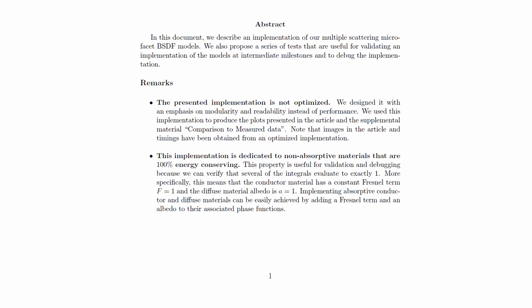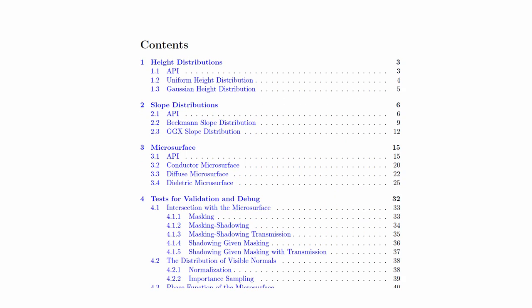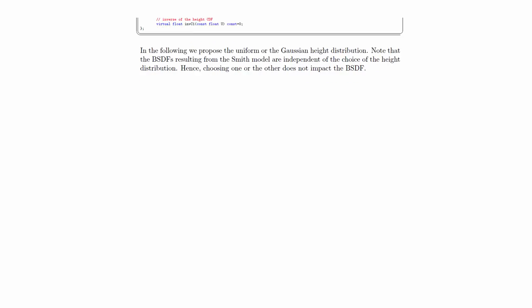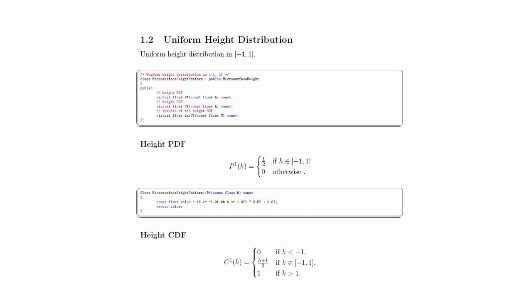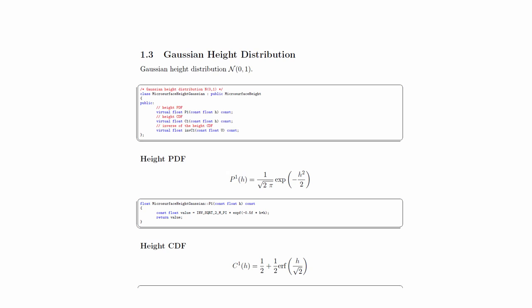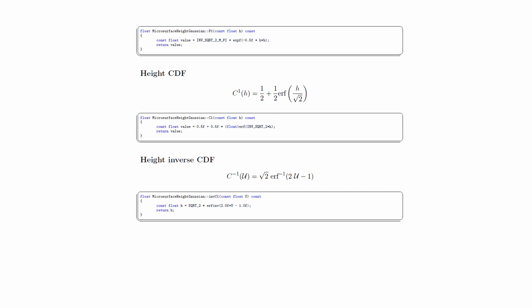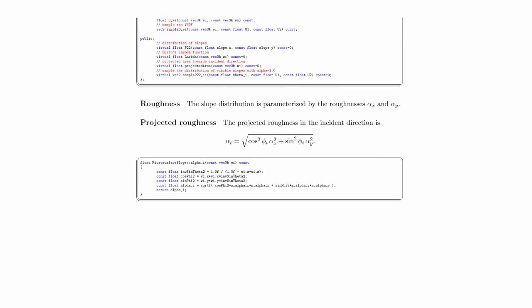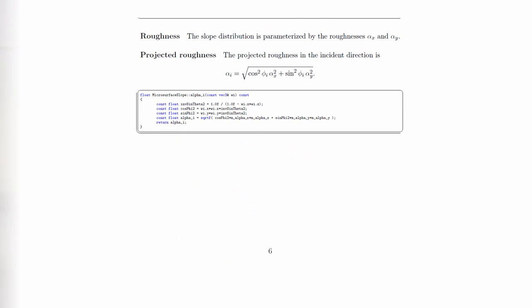Furthermore, our implementation is analytic and does not use per-BSDF precomputed data, which makes our BSDFs usable with textured albedos, roughness, and anisotropy. In the supplemental materials, we provide a document describing a tutorial implementation for various materials and ready-to-use plugins for the Mitsuba physically based renderer.